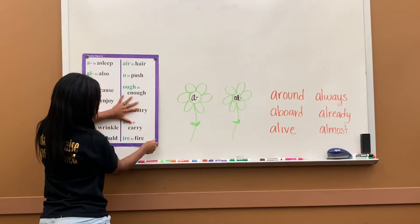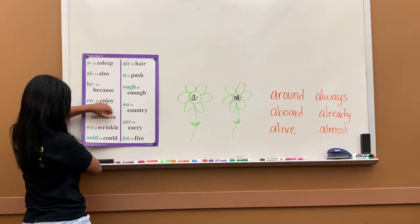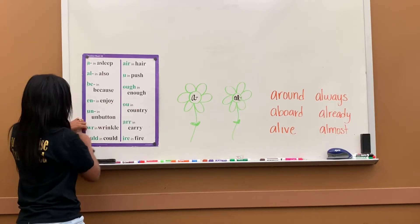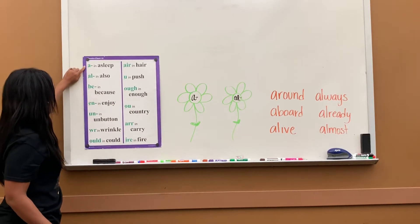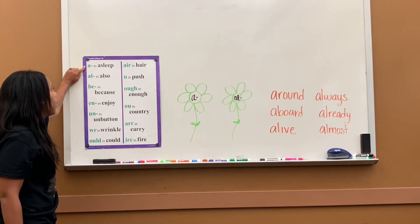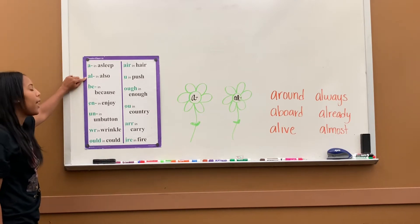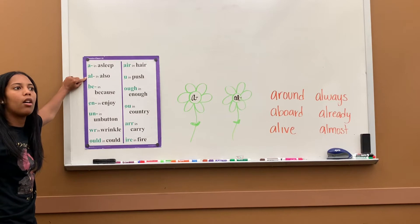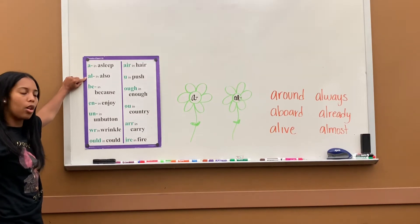So this is Phonic Chart 12. Let's go ahead and begin to go over it. A says a in asleep. AL says all in also.